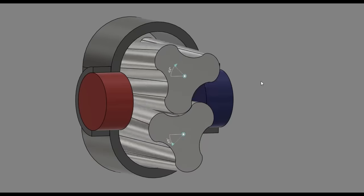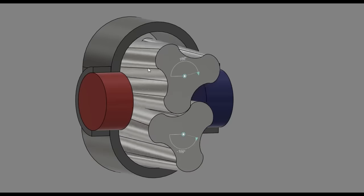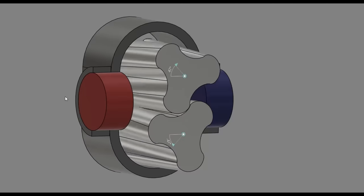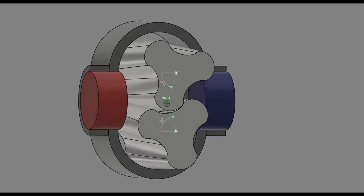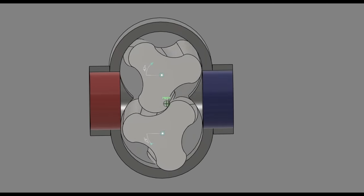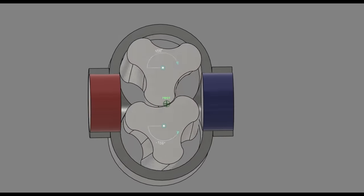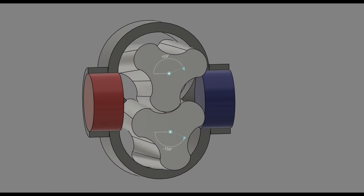Almost all of the time, the rotors are symmetric and have the same number of lobes, and a root style blower might have a slight twist angle to the rotors, maybe 10 to 15 degrees, which might confuse some people. That's only there to reduce the pulsation of the air, making the compressor quieter.